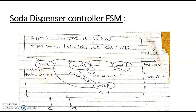Here I am making the TOT register — I am clearing it. So for that, I am making TOT_clear equal to 1. It will then enter into the wait state. After entering into the wait state, it will check for the coin. If the coin is present, it will enter into the add state.